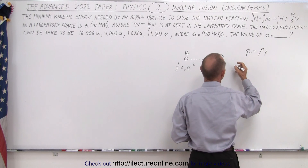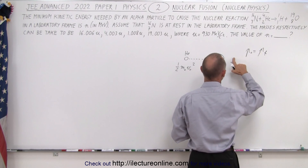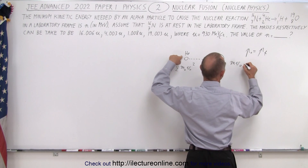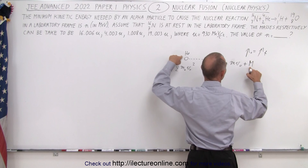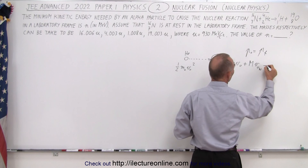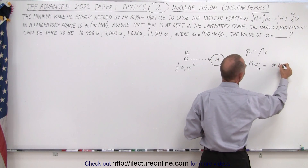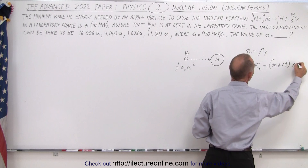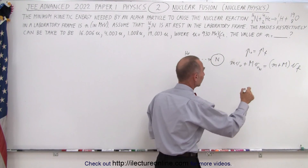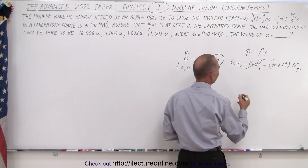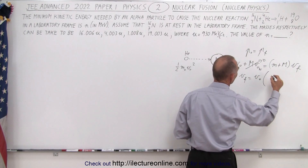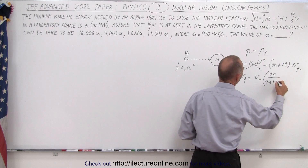Conservation of momentum: P-initial equals P-final. That gives us mass of helium times initial velocity of helium, plus mass of nitrogen times its initial velocity, equals the combined mass (M plus M) times V-final. Since nitrogen starts at rest, that term goes to zero, so V-final equals V-initial times the ratio M divided by (M plus M).